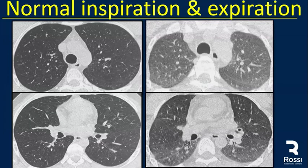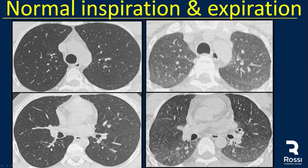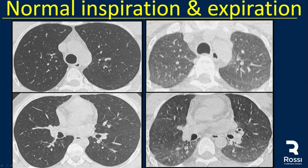This is a normal inspiratory CT where we see a rounded trachea. In an expiratory CT, we see the flattened posterior membrane of the trachea. When we perform an inspiratory CT, we see homogeneous lung. And when there is no air trapping, we see the same thing in the expiratory CT.